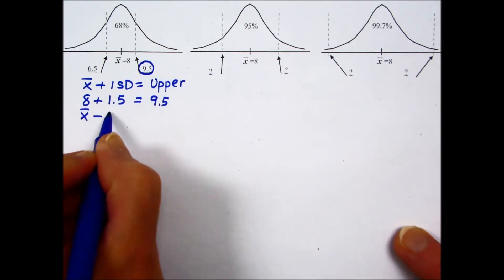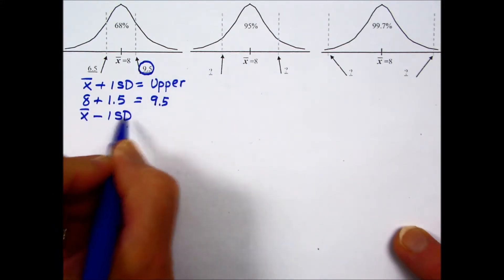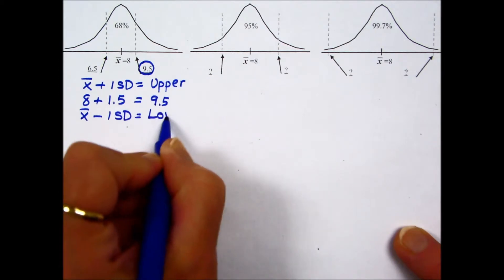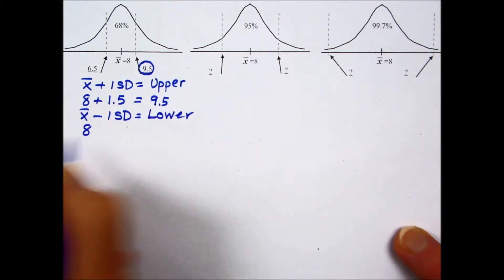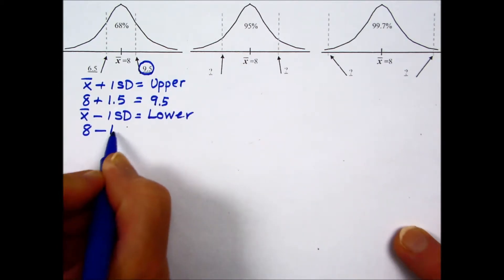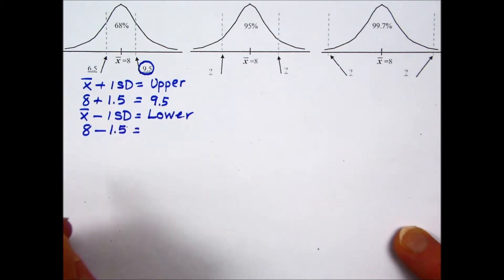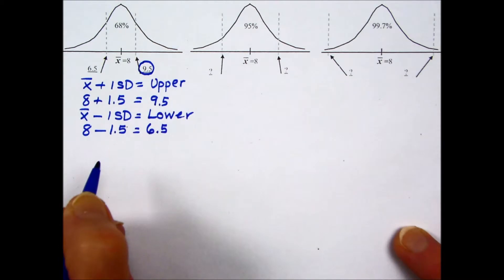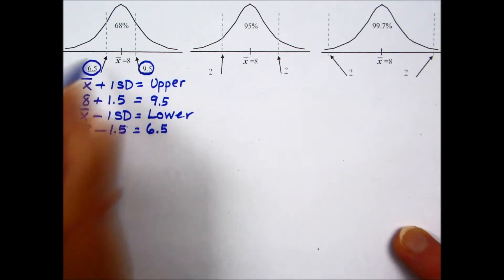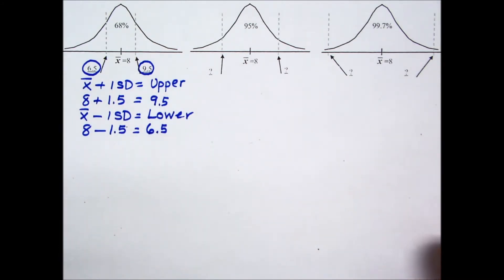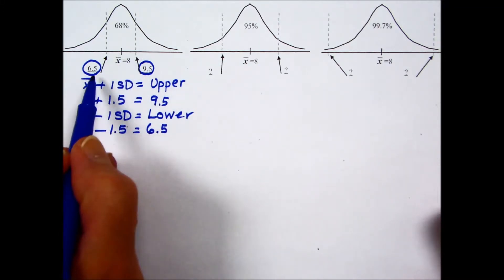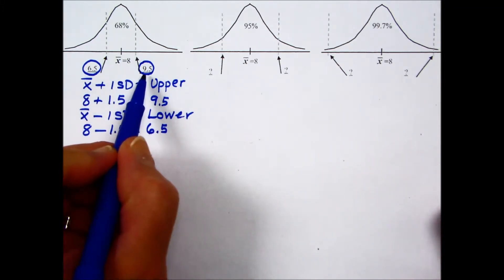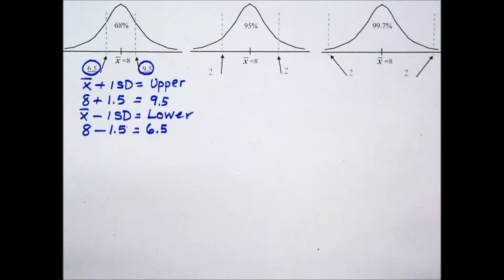To find the lower boundary, we're going to take the mean minus one times the standard deviation. Going back to the mean of 8 and a standard deviation of 1.5, this time subtracting, we end up with a value of 6.5 and that is the value that was given. So 68% of the values will run between a low of 6.5 and an upper boundary of 9.5.